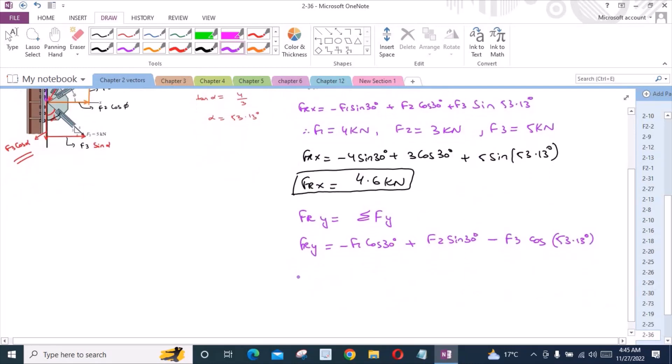Now we know that F1 is equal to 4 kN, F2 is equal to 3 kN, and F3 is equal to 5 kN. So FRy is equal to negative 4.96 kN.